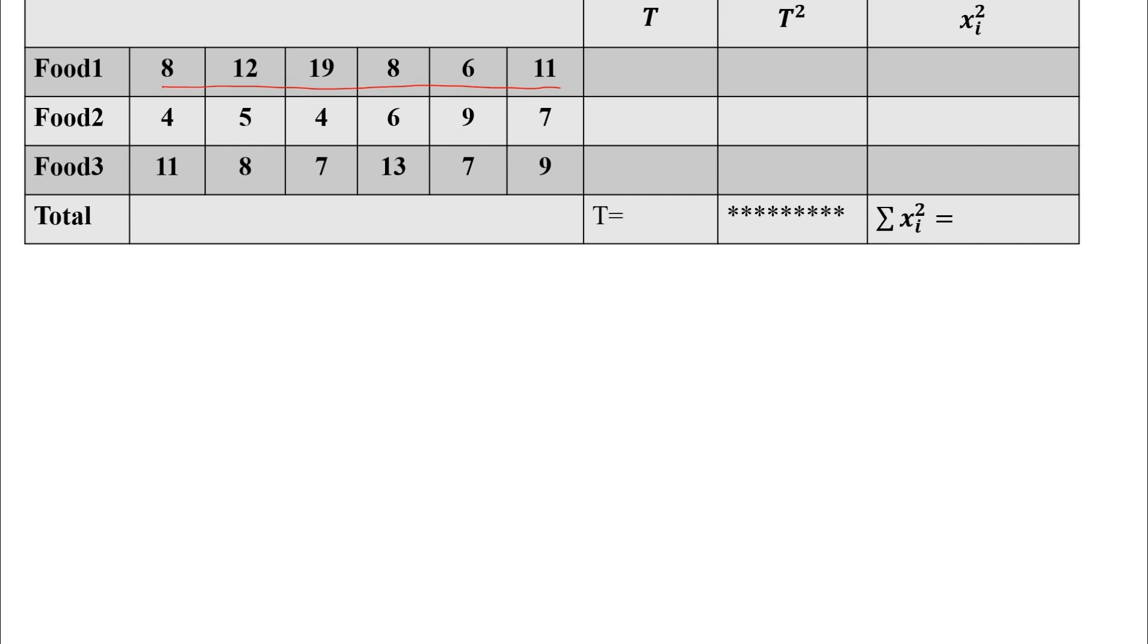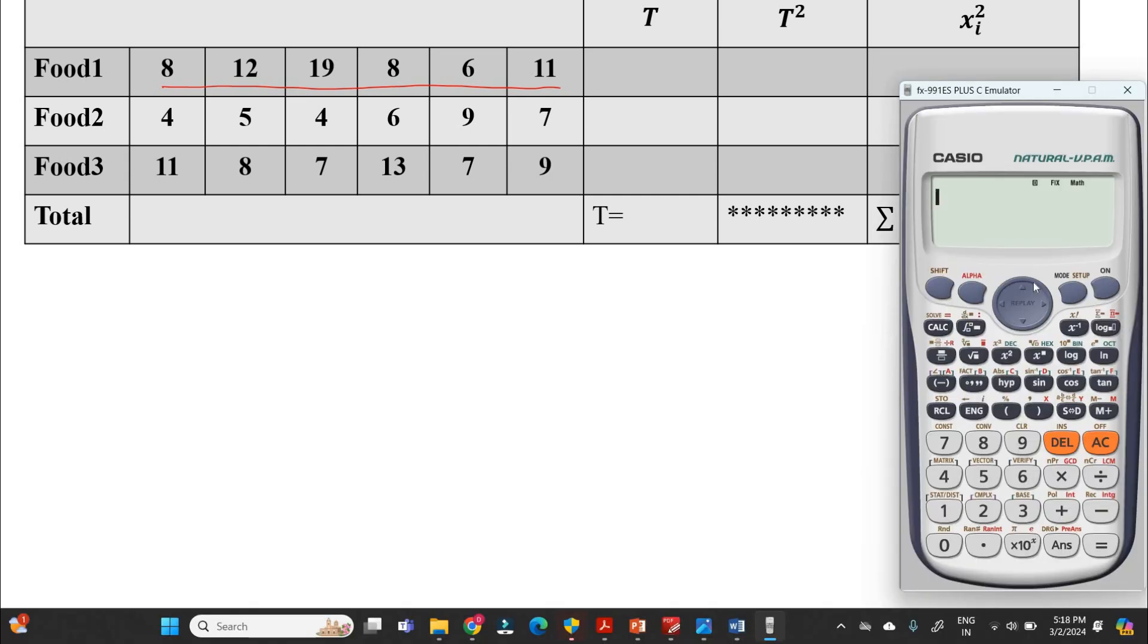Let me explain with an easy shortcut method. There are many methods to solve this ANOVA problem. I am going with shortcut method. Consider a calculator, in that go with mode, in that consider stat 3, in that 1-variance, the first option you can consider. In that option enter the data: 8 enter, 12 enter, 19 enter, 8 enter, 6 enter, 11 enter.